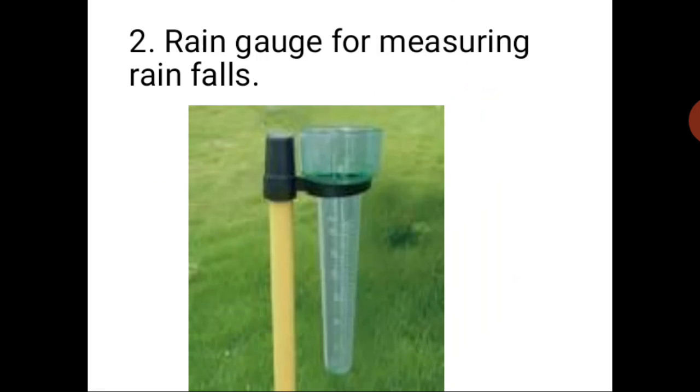Rain gauge. Rain gauge. For measuring rainfall, the amount of rainfall in a location. This is called rain gauge.